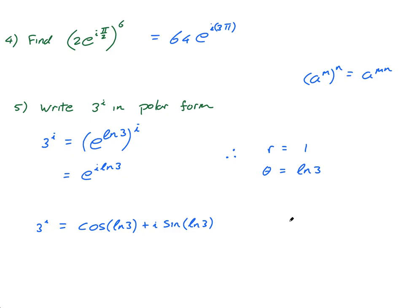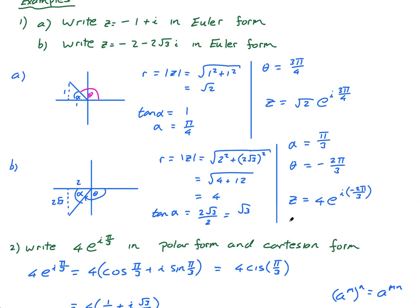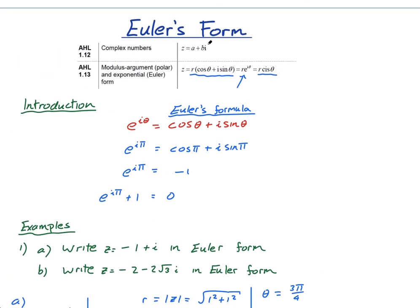So those are a few nice examples. The main thing I want you to be able to do is convert from Cartesian form into polar form and Euler form, and from any of the three forms into either of the other two. Hopefully you enjoyed that, and I'll see you in the next video.